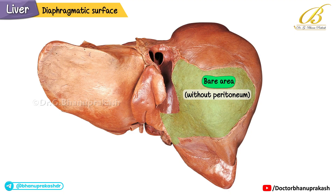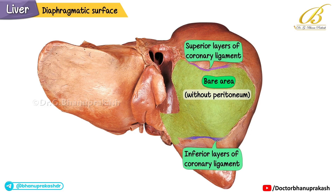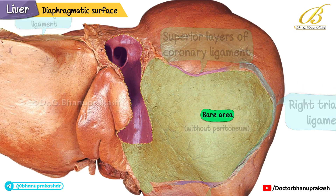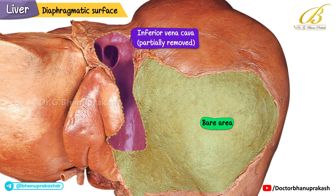This bare area is bounded by the superior and inferior layers of the coronary ligament and the right triangular ligament, while on the left lobe you can also see the left triangular ligament. In the left part of the bare area lies a deep sulcus containing the partially removed inferior vena cava, and nearby the openings of the hepatic veins are visible.